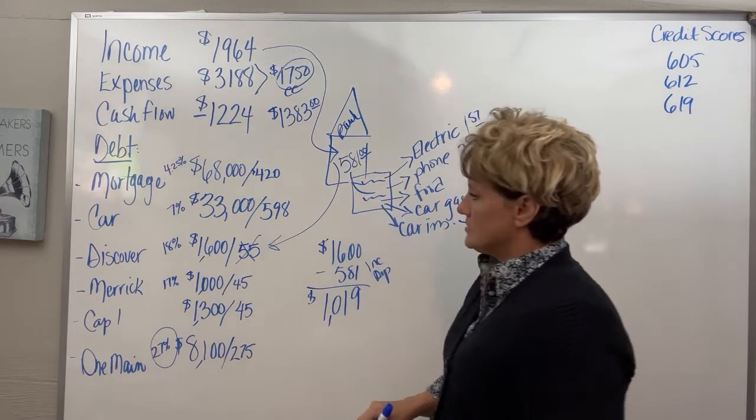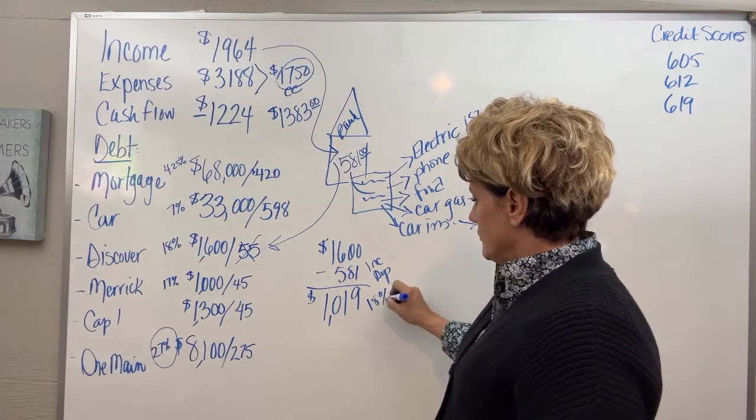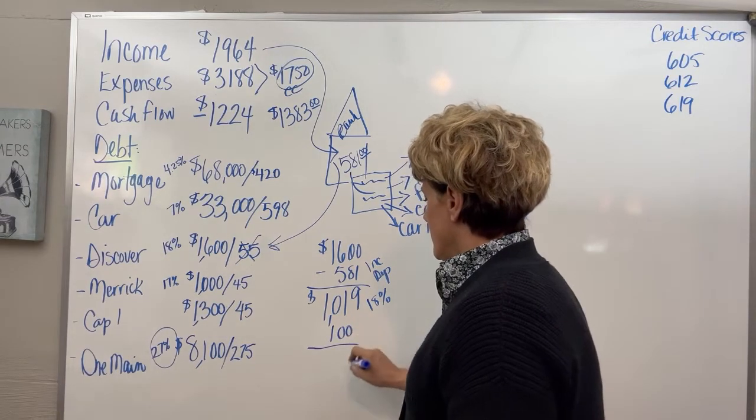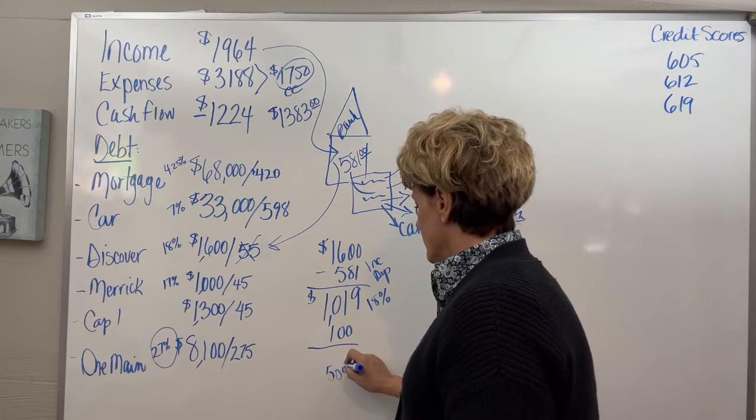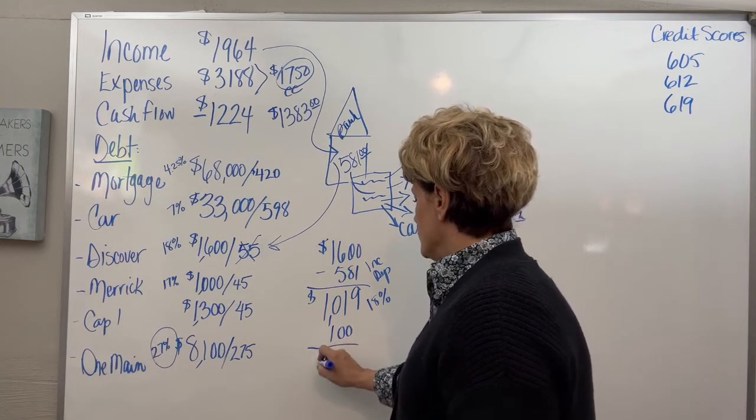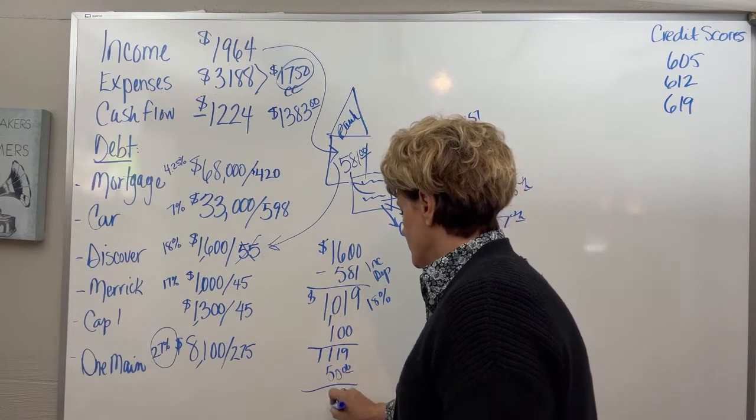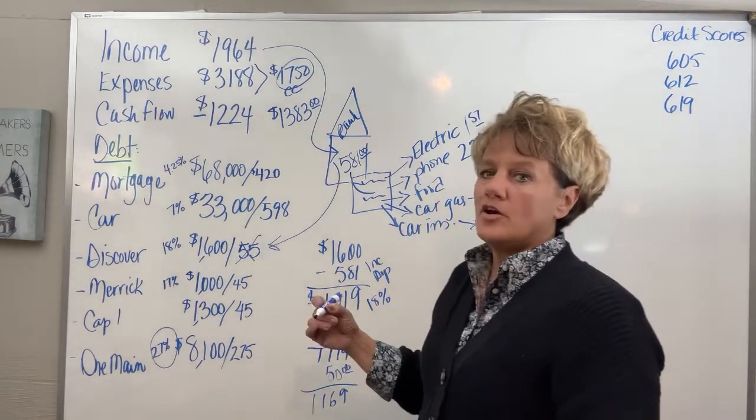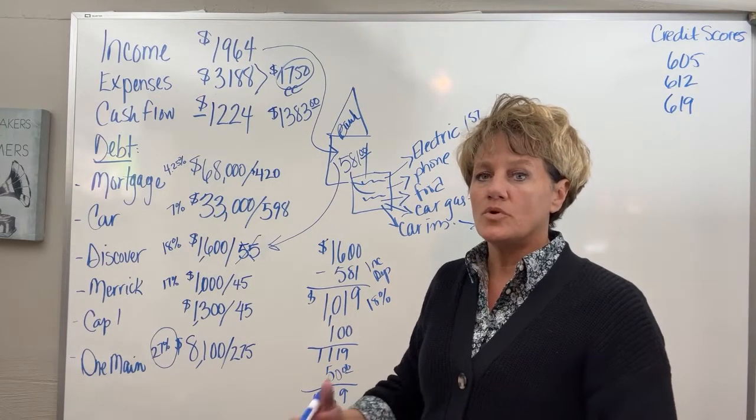Then slowly, as the electric comes up, and then as your car gas comes in, 50 here, 50 there, or whatever, you'll start adding the numbers back up. But that's throughout the month. It gives him a couple of weeks to come up with another paycheck. It gives him a couple of weeks to work.